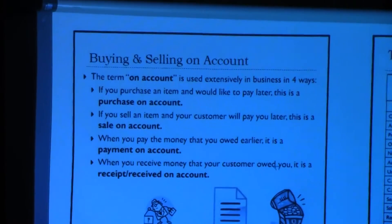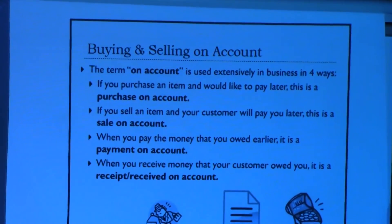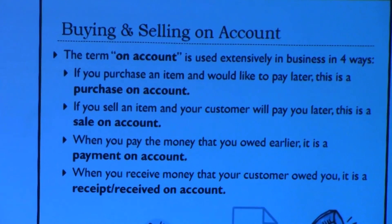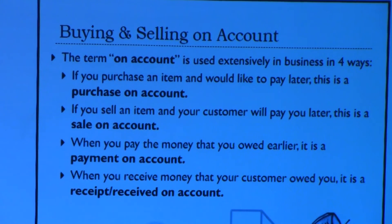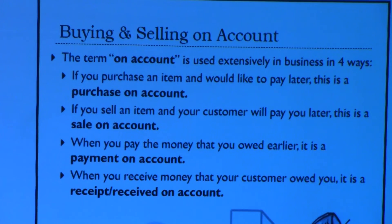We're now moving to a different topic: buying and selling on account, which is important accounting terminology. When we say 'on account,' it can mean purchased on account, sold on account, payment on account, or receipt on account. These refer to accounts receivable and accounts payable. You can be on either side of the transaction — you can have a customer who pays you on account, making it a receivable, or you can be the customer paying someone else on account, making it a payable.